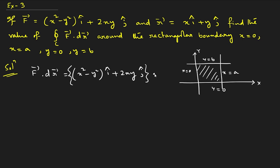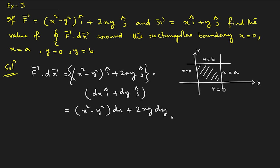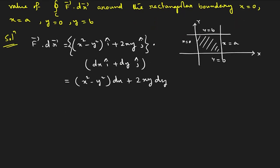Since dr̄ = dx î + dy ĵ, the dot product gives F̄·dr̄ = (x²−y²)dx + 2xy dy. This is of the form P dx + Q dy, where P = x²−y² and Q = 2xy. Since P and Q are polynomials, they are continuous with continuous partial derivatives, so we can directly apply Green's theorem.